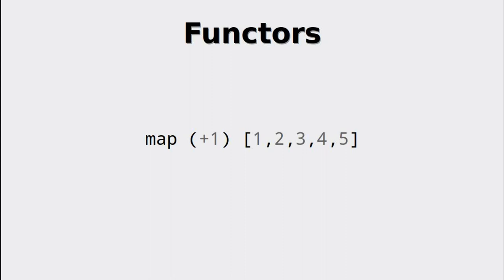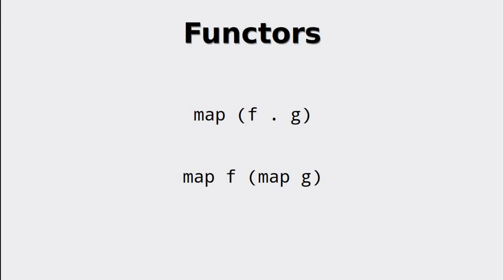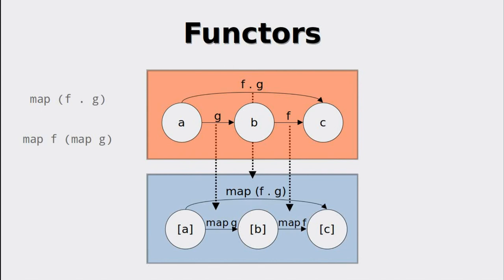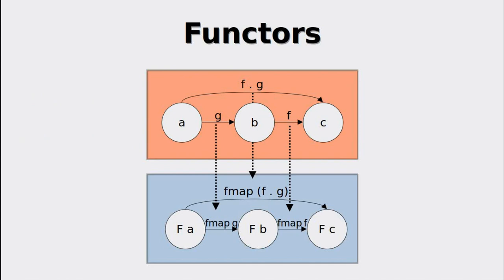Let us use our newly gained knowledge in order to prove that these two expressions are equivalent. By understanding the functions as morphisms in a category, we can see that the functions and the compositions of f and g and their respective mappings behave the same. This is given by the isomorphism of the two categories. Since map is a functor, the two expressions have to be equivalent. The nice thing is that this is true for all functors, proved in the same way by generalizing the functor.